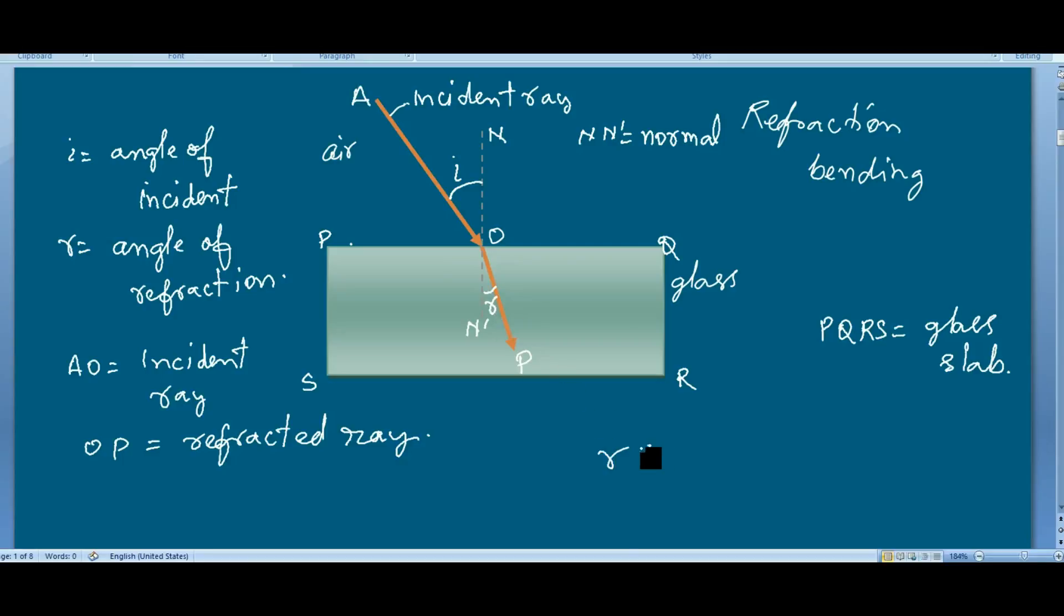When will it happen? When the ray of light passes from a rare medium to a denser medium. This is the glass, which is the denser medium than the air.